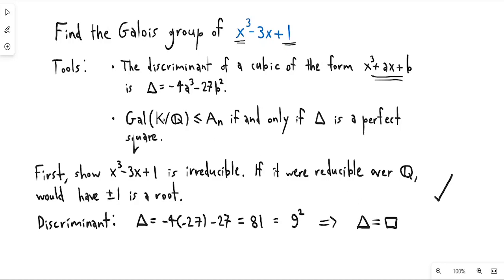So that tells us that the Galois group of this polynomial is a subgroup of Aₙ. And then we also know that the Galois group of this polynomial is transitive, and we know that because the polynomial is irreducible.